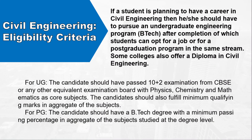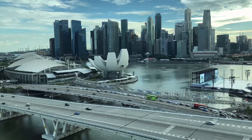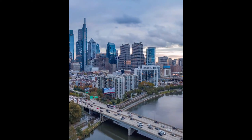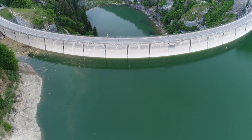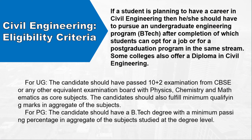Eligibility Criteria: If a student is planning to have a career in civil engineering, then he or she should pursue an undergraduate engineering program (B.Tech), after completion of which students can opt for a job or a post-graduation program in the same stream. Some colleges also offer a diploma in civil engineering. For UG, the candidate should have passed the 10+2 examination from CBSE or any other equivalent board with physics, chemistry and mathematics as core subjects, and should fulfill minimum qualifying marks in aggregate.